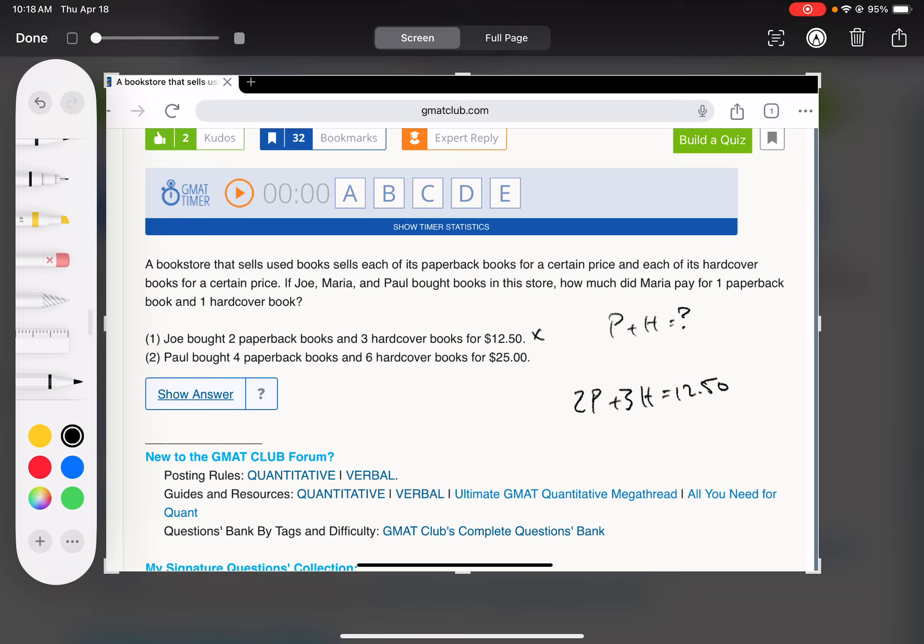Number two, Paul bought, so 4P plus 6H is $25.